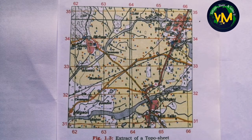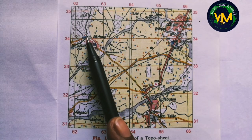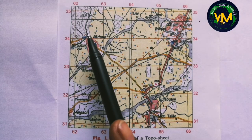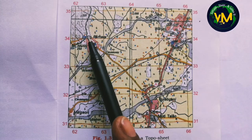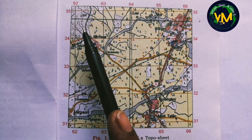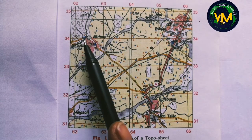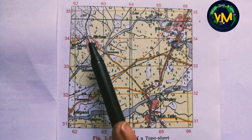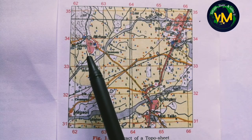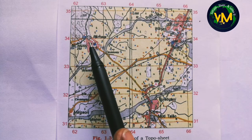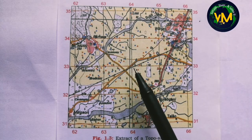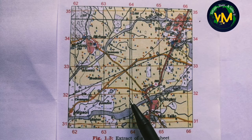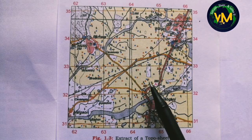Often students ask: what is the answer if a feature like a dry tank is located on both squares? The suggestion is to see where the maximum part of the place is located. If the dry tank is mostly in one square, write that square. If it is equally present in both, either square is correct. The same applies to the temple symbol here — this temple is located exactly on line 32, so the answer can be either 6432 or 6431; both are accepted in the board exam.